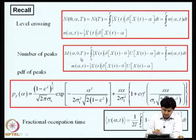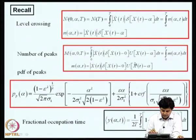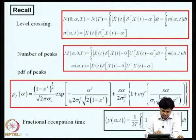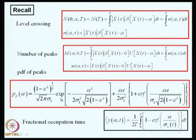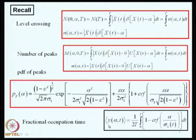We also asked the question on the number of peaks above a given level alpha, and we were able to characterize its properties for Gaussian random processes. Based on certain heuristic assumptions, we also derived the probability density functions of peaks for both narrow-banded and broad-banded processes. Here, epsilon is a bandwidth parameter that helps us characterize whether the process is narrow-banded, broad-banded, or somewhere in between. We also characterized the so-called fractional occupation time — the fraction of time that a random process spends above level alpha in a given duration 0 to T — and derived its expected value for a Gaussian random process.